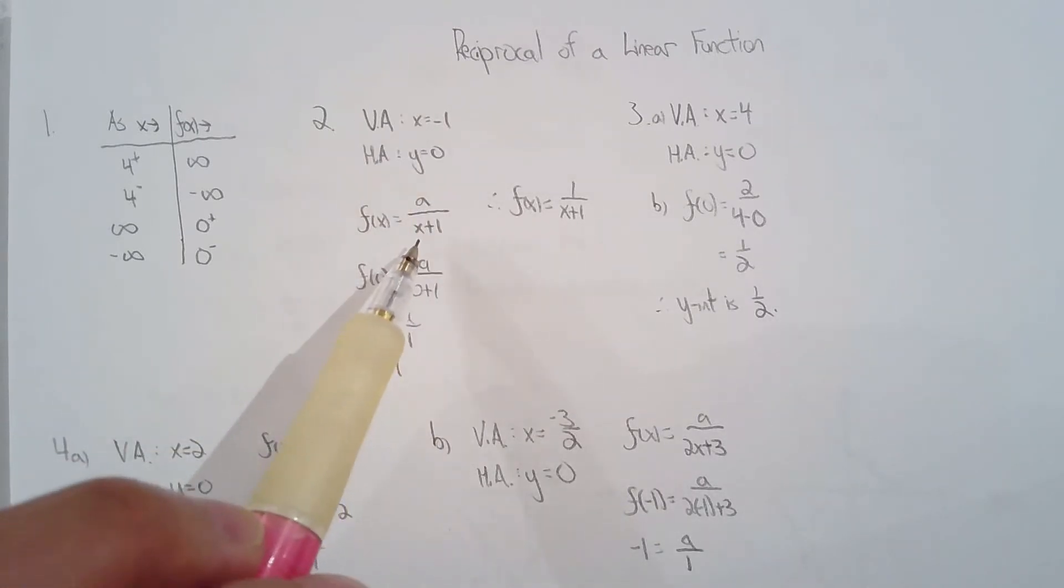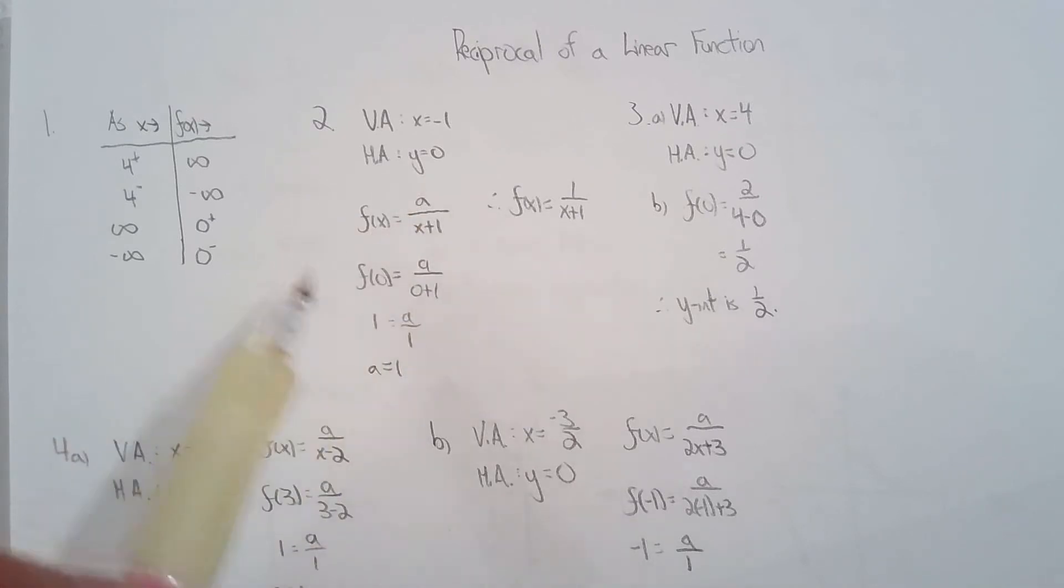So using the vertical asymptote, I can generate the factor of x plus one in the denominator. It's basically what you did with polynomials. With the zero, you can generate the factor. And then I have to solve for the numerator and I just sub the point on the function.